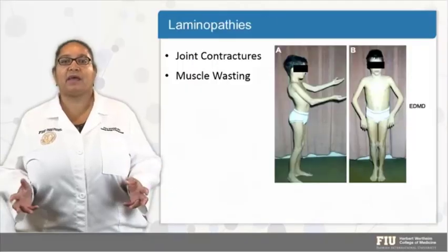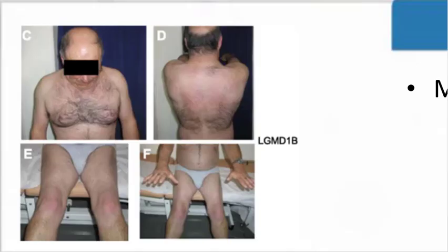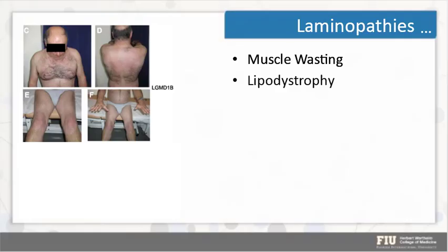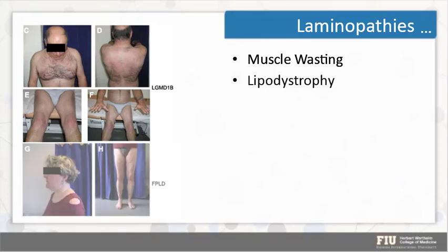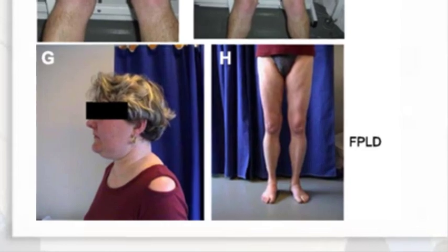Some other green screen examples: in other laminopathies such as limb girdle muscle disease, there are four pictures of lipodystrophy, or loss of fatty tissues, as you can see in this lady in the final two images.